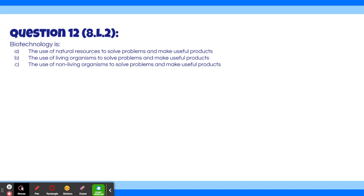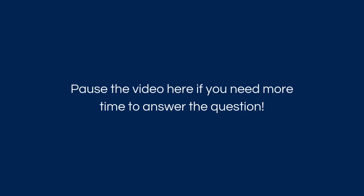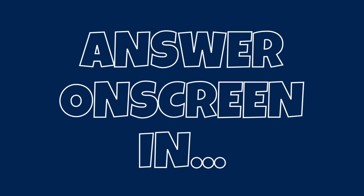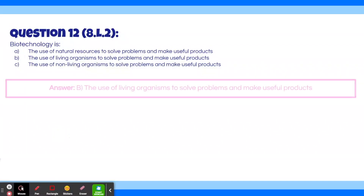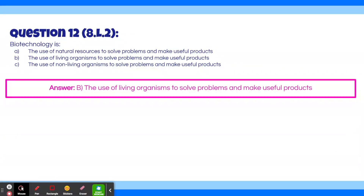Question 12: Biotechnology is — A, the use of natural resources to solve problems and make useful products. B, the use of living organisms to solve problems and make useful products. C, the use of non-living organisms to solve problems and make useful products. The answer is B: the use of living organisms to solve problems and make useful products.